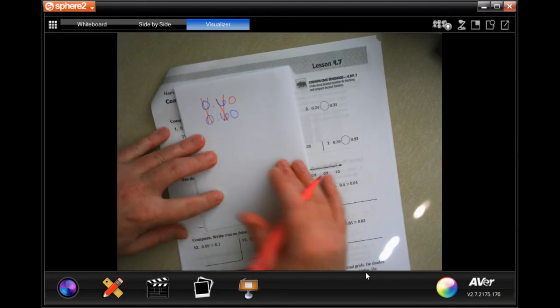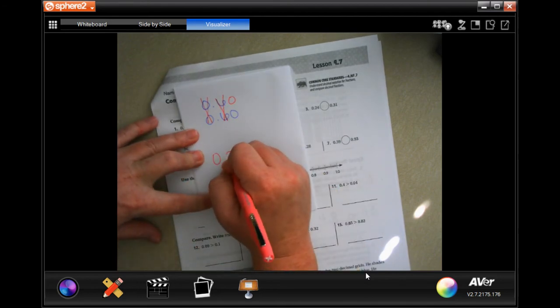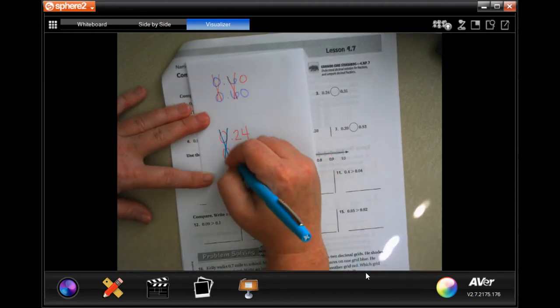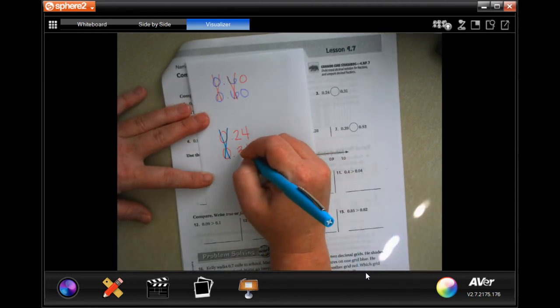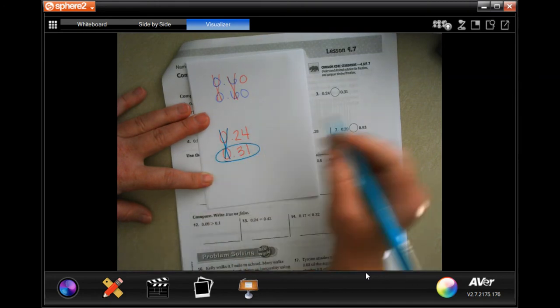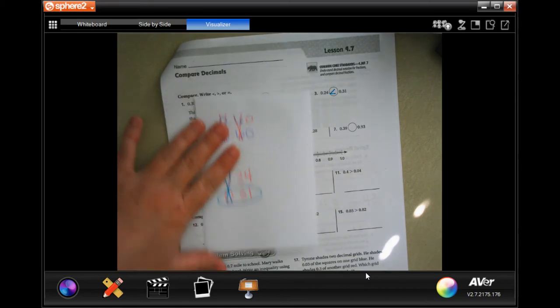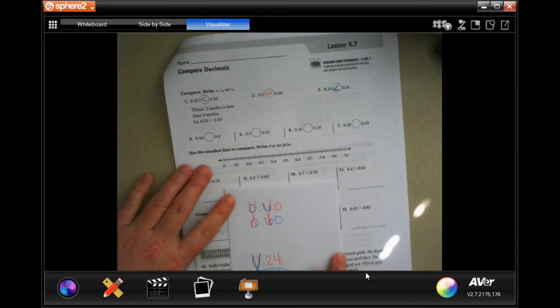Now, if I did that with these next ones, zeros are the same. Now, I have one that's a two and one that's a three. This one's bigger. So, if you need to line them up, go ahead and line them up. There's nothing wrong with that.